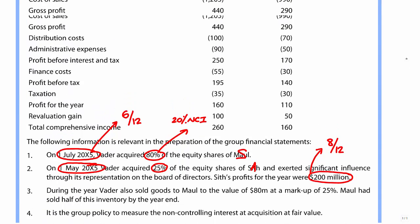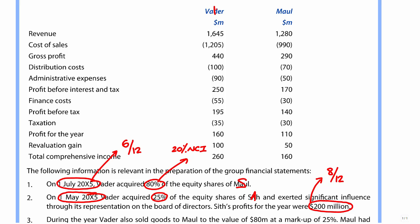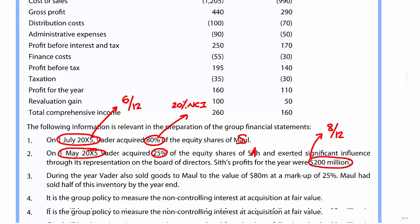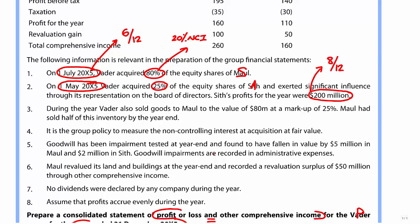Looking at what we've got in the accounts: VEDA is the parent, and MALL where we want six twelfths of all of MALL's results. During the year VEDA sold goods to MALL, so there are intra-company sales. There's a markup of 25% and half was sold, so half is left in inventory, which means there's going to be some form of PUP adjustment and intra-company sales elimination.